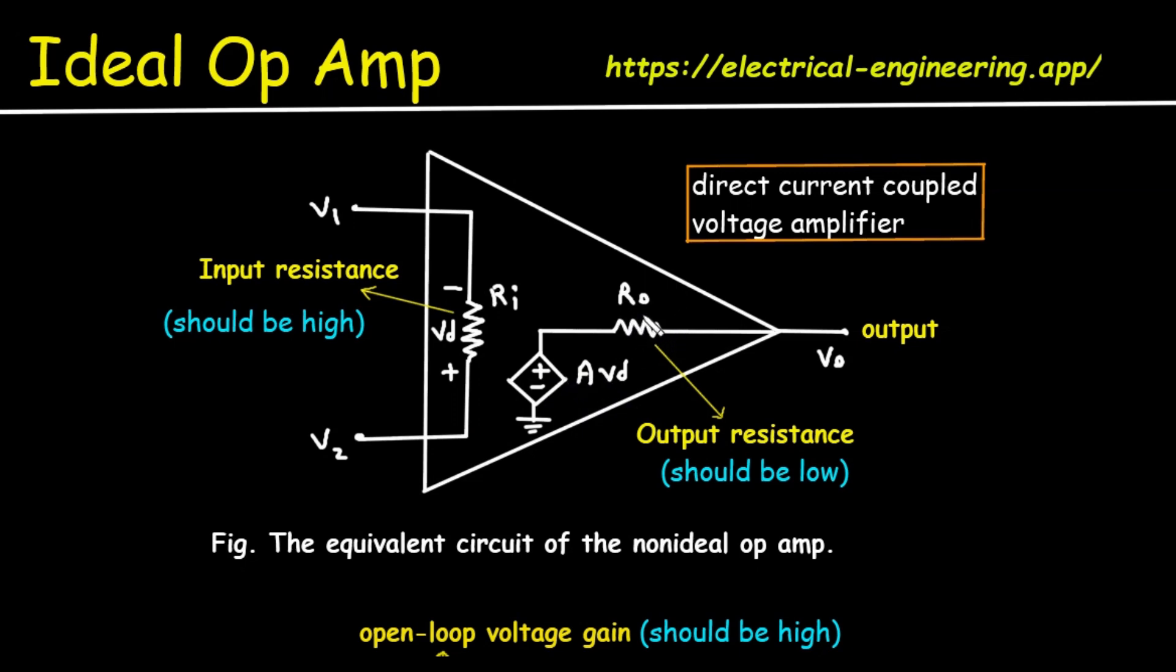Next is output resistance which is represented by RO. The image notes that the output resistance should be low. We can see the input resistance should be high and output resistance should be low. Why should the output resistance be low? A low output resistance allows the Op Amp to deliver its amplified voltage to the next stage, the load, without a significant voltage drop. It acts like a strong stable voltage source that can deliver to various loads effectively. Real Op Amps have a low RO, typically in the range of a few tens to a few hundred Ohms.